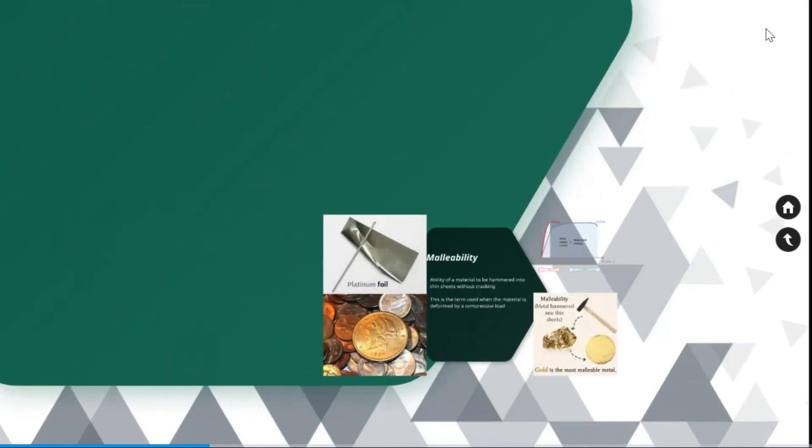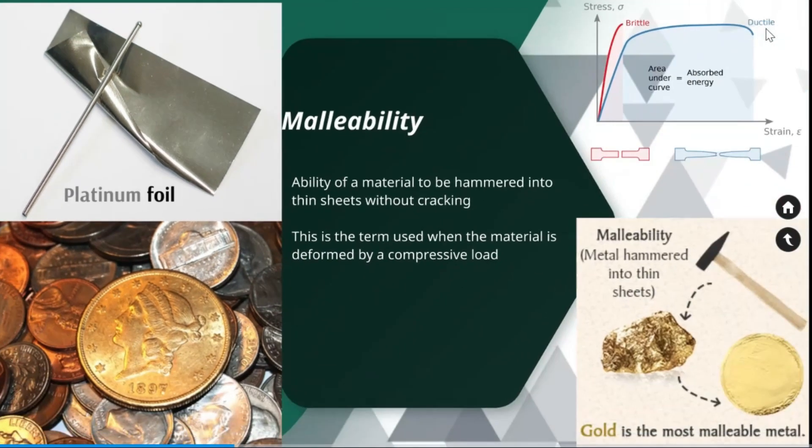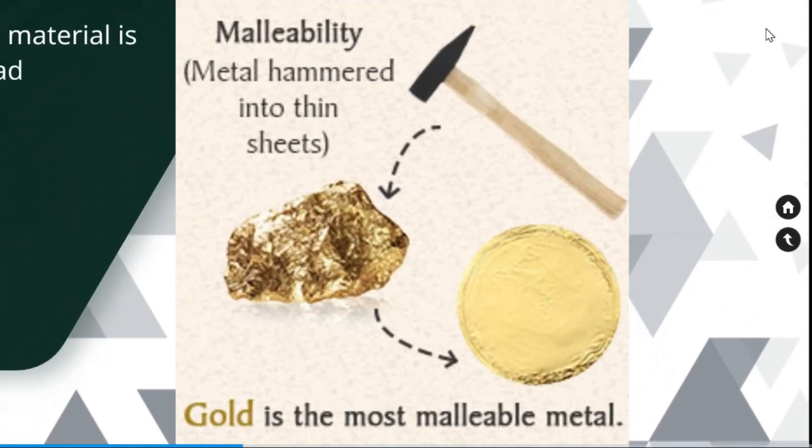Malleability. The ability of a material to be hammered into thin sheets without cracking is called malleability. You can see here coins and platinum foil which are formed into thin sheets. Gold is the most malleable material.